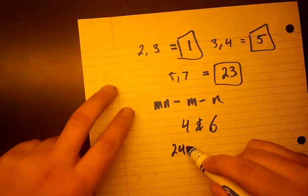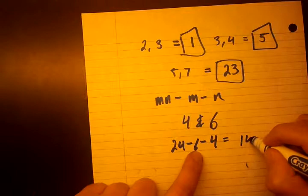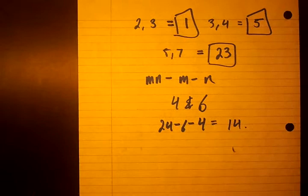So we get 24 minus 6 minus 4, so that equals 20 minus 6 is equal to 14. So this formula tells us that it's 14, but let's see about that.